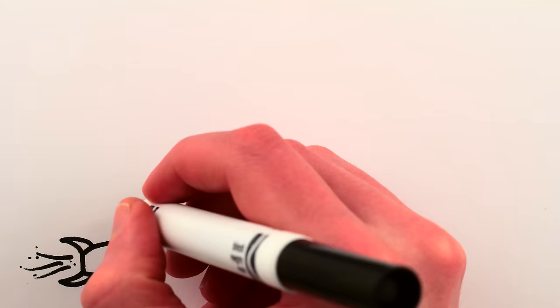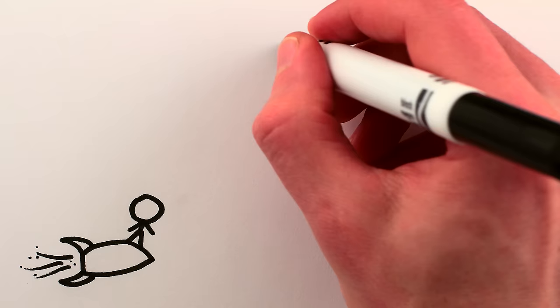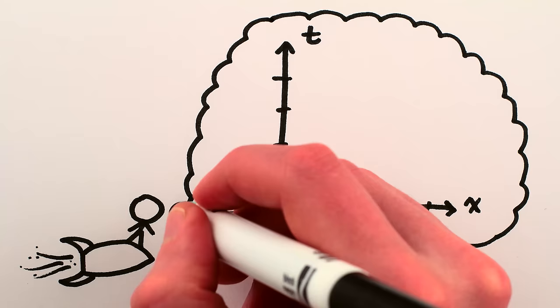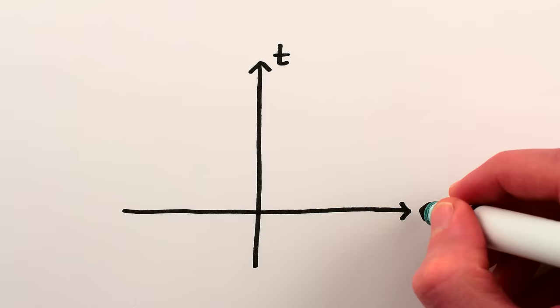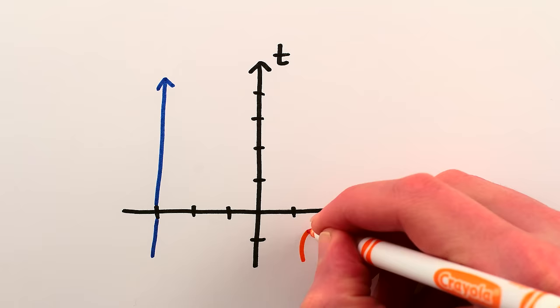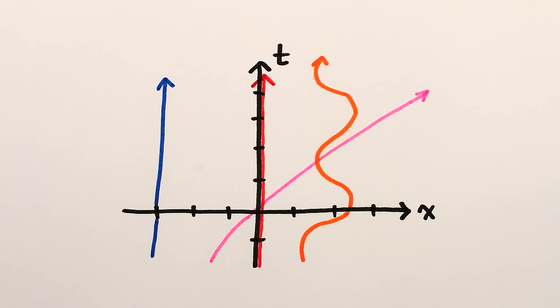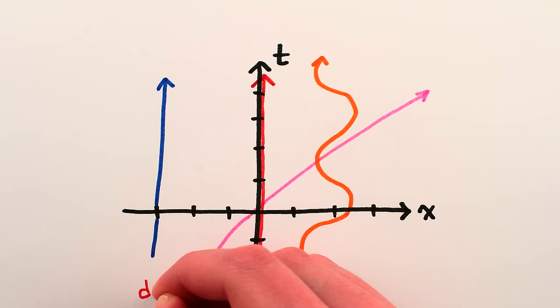We'll start with a key property of spacetime diagrams. When someone draws a spacetime diagram from their own perspective, on that diagram they are always, for all time, located at position x equals 0, since any object is always a distance of 0 away from where that object is. Or in other words, a spacetime diagram like this represents your perspective only if your world line is a straight vertical line that passes through x equals 0.